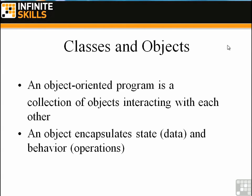An object encapsulates state, which is just data, and behavior, which includes the operations or the things that an object does. Every object has some sort of state — what it's doing at the present time, its name, its age, things like that. And of course, objects have behaviors, things that they do. A car drives down the road, for example. That's all we do when we're creating objects: we create a single entity that includes both data and operations.